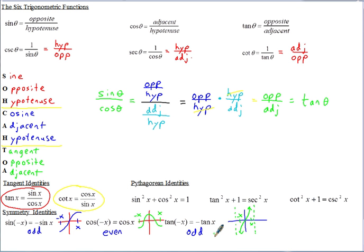I didn't put the other three trig functions because if you remember these three just by looking at their graphs, the other three are the same — they match up with the one they're the reciprocal of. So cosecant and cotangent are reciprocals of sine and tangent, so those are also odd. And secant is the reciprocal of cosine, so it's also an even function.